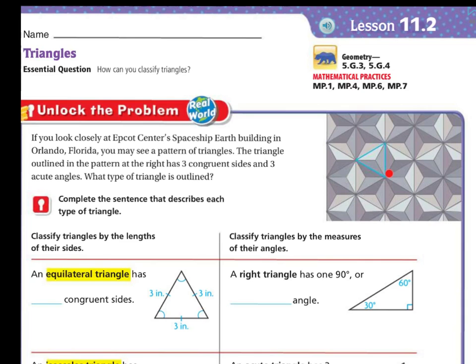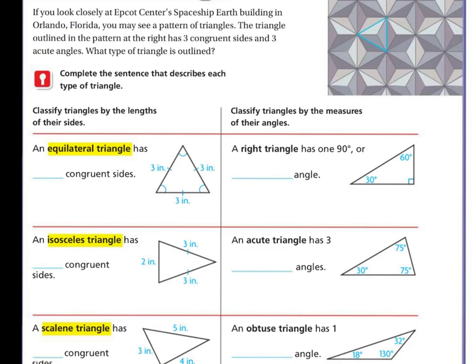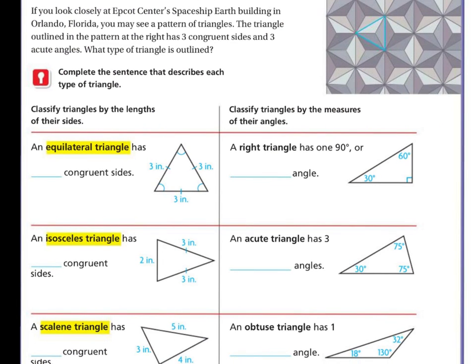So, three congruent sides, which means they're all the same, and three congruent angles, which means they're all the same. If you said equilateral triangle, then you were correct, because an equilateral triangle has three congruent sides and three congruent angles.